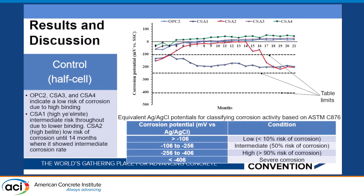Moving on to the results and discussion. First, for the control series, looking at the half-cell potential: the table here characterizes the equivalent silver/silver chloride potential for classification of corrosion activity based on ASTM standard C876. Based on this table, we characterized the graph. OPC2, CSA3, and CSA4 indicated a low risk of corrosion, and we associated that with the high binding capacity of these binders.